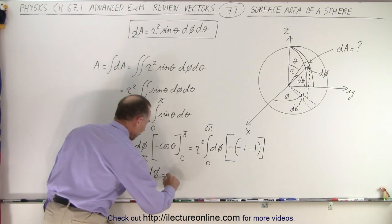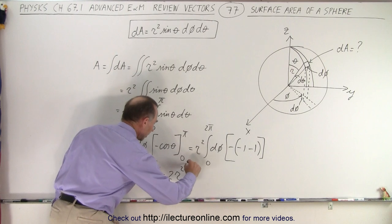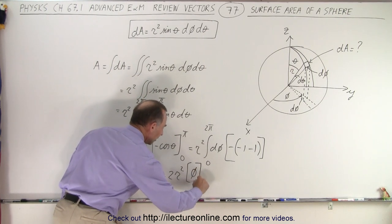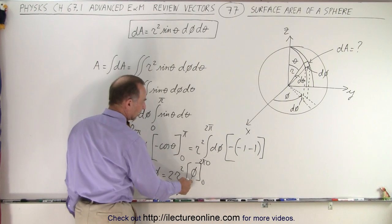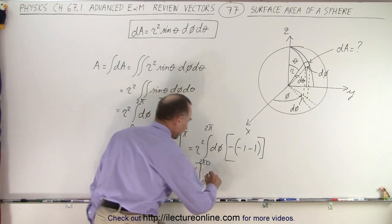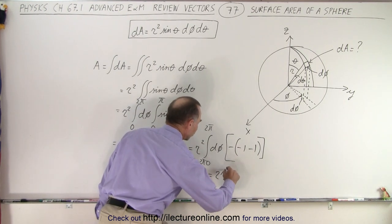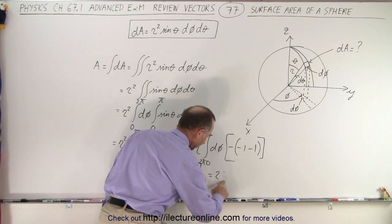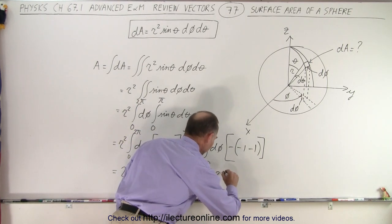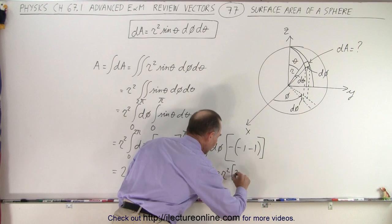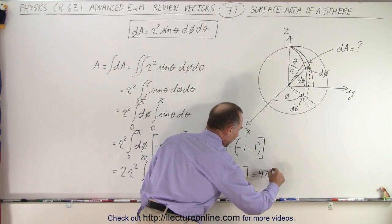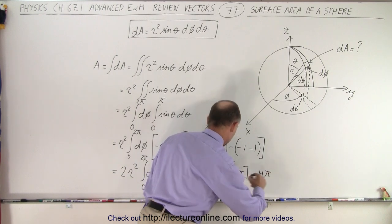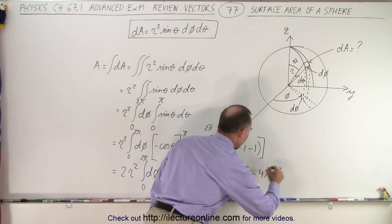So this becomes equal to 2r squared times the integral of d phi from 0 to 2π. When we integrate that, we get 2r squared times the angle phi from 0 to 2π. When we plug in the lower limit, we get nothing. Plug in the upper limit, we get 2π. So this is 2r squared—that's a terrible looking r, let me try that again—r squared times 2π. Multiply that times 2, so we get 4π times r squared.